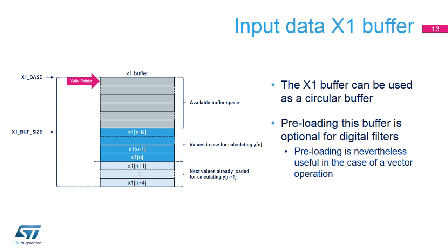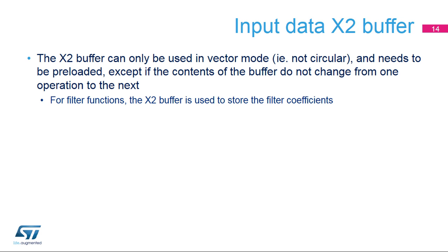The X1 buffer can be used as a circular buffer. New data are continually transferred into the input buffer whenever space is available. The write pointer automatically wraps around when it reaches the last 16-bit entry in the buffer. Pre-loading this buffer is optional for digital filters, since if no input samples have been written when the operation is started, it is flagged as empty, triggering the CPU or DMA to load new samples until there are enough to begin operation. Pre-loading is nevertheless useful in the case of a vector operation where the input data is already available in system memory and circular operation is not required. The X2 buffer is used to store coefficients and is usually loaded once during initialization of the FMAC; consequently, it does not support circular addressing mode.